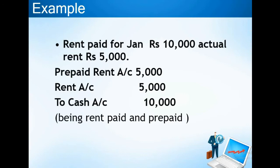Rent is an expense, which is a nominal account, so we debit the rent account for Rs. 5,000. Cash is an asset — a real account — and it is going out, so we are reducing an asset, which is why we credit the cash account for Rs. 10,000. This is the journal entry for January.